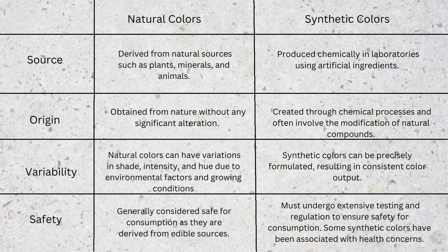Let's look at the differences between natural and synthetic colors. First, source: natural colors are derived from natural sources such as plants, animals, and minerals, while synthetic colors are produced chemically in the laboratory using artificial ingredients. Second, origin: natural colors are obtained from nature without any significant alteration, while synthetic colors are created through chemical processes and often involve the modification of natural compounds.